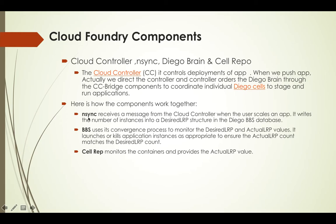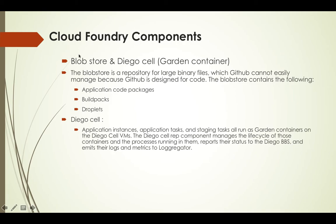Let's discuss nSync, BBS, and Cell Repo one by one. nSync receives a message from the Cloud Controller when the user scales an app, and it writes the number of instances into the Desired LRP value. If the Desired LRP value and Actual LRP values are different, it goes to the containers and determines whether new instances are required to run or extra instances are running that need to be killed. Cell Repo monitors the containers and provides the Actual LRP values.